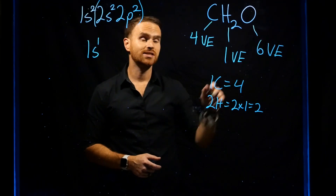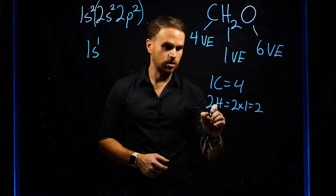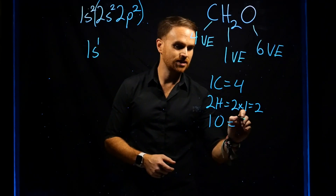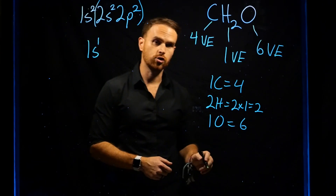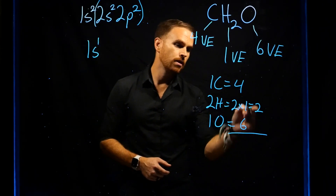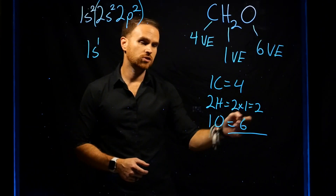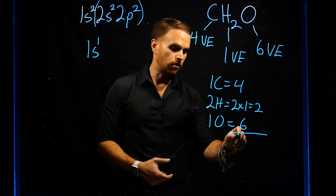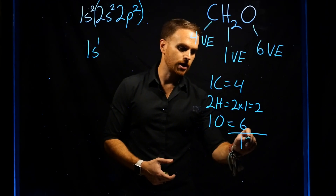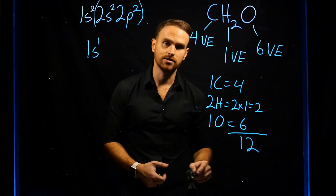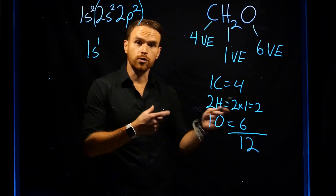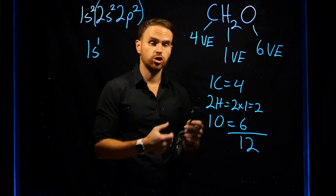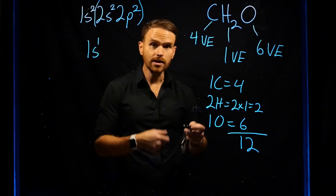We have a single oxygen, which is going to give us six valence electrons. Taking the sum: 4 plus 2 is 6, plus 6 is 12. We see that we have 12 valence electrons with which to create our Lewis structure.